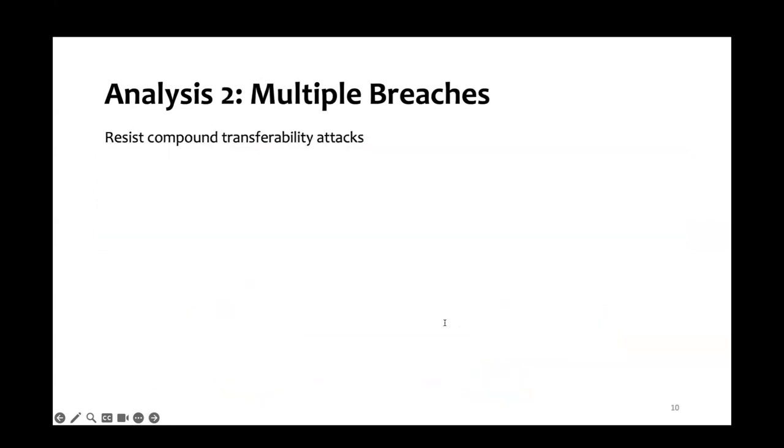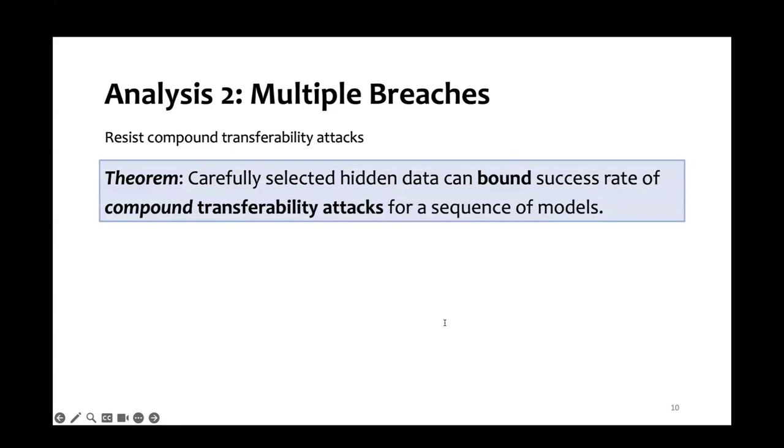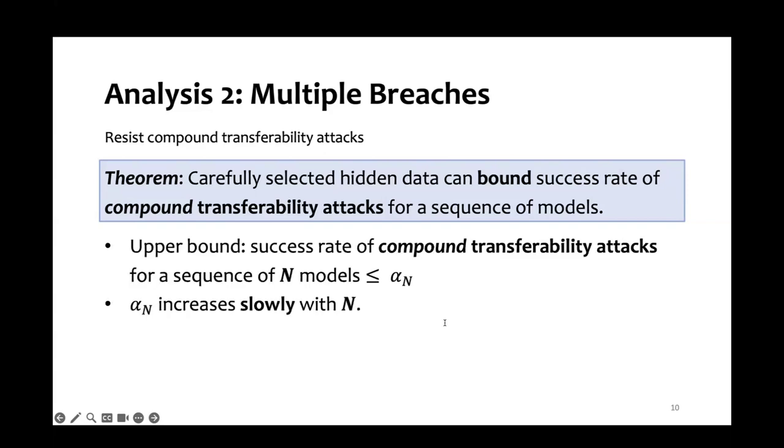Now let's consider the more challenging scenario when there are multiple model breaches. In this case, the models need to resist compound transferability attack. We show that by carefully selecting the hidden data, we can upper bound the success rate of compound transferability attacks for a sequence of models. Here's a detail on the upper bound: this upper bound grows slowly with the number of models in the sequence. This theorem is driven by an algorithm that selects hidden data.